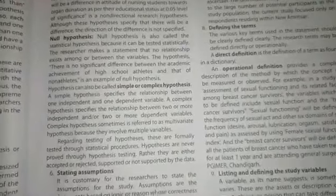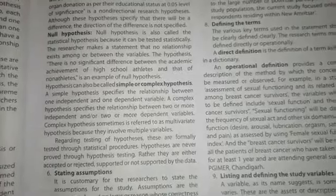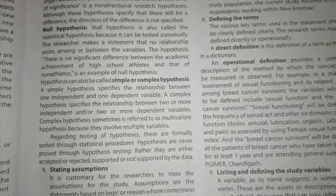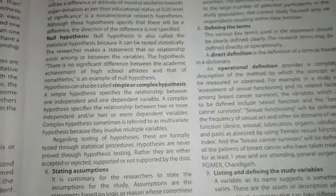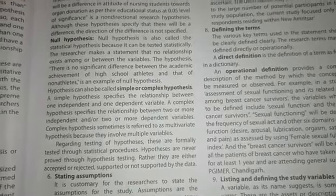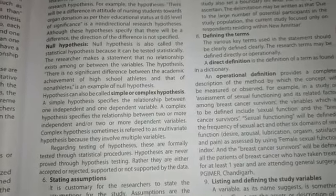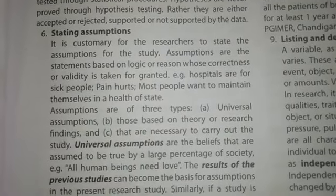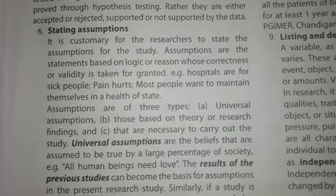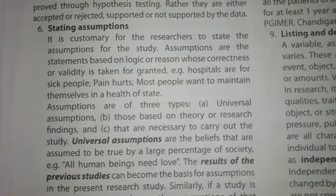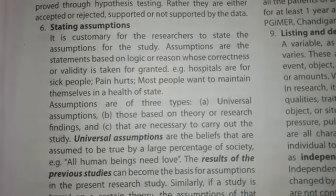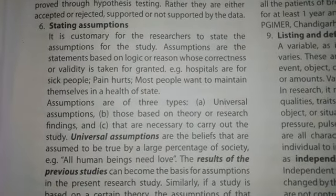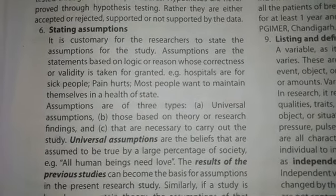Let's see how the hypothesis can be simple or complex. In a simple hypothesis, there is one dependent variable and one independent variable. In a complex hypothesis, there are multiple dependent and independent variables. The next step is stating assumptions. Assumptions are statements based on logic or reason whose correctness or validity is taken for granted — for example, hospitals are for sick people, and pain hurts.